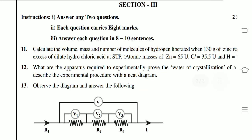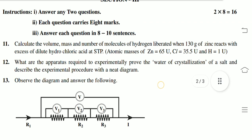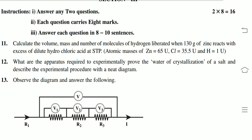Section 3: 8 marks questions. We have to attend any 2 questions, 2 into 8 is 16. Calculate the volume, mass and number of molecules of hydrogen liberated when 130 grams of zinc react with excess dilute hydrochloric acid at STP.